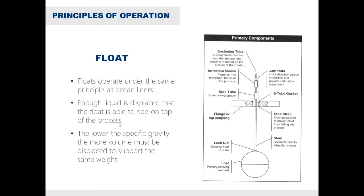You have a float, which is the primary sensing element — the device that will actually transfer all the movement to the switching element itself. That's connected to a stem, and on that stem you have an attraction sleeve, which is inside of an enclosing tube. That enclosing tube seals off the process from all the electrical switching elements and enclosure on the inside.